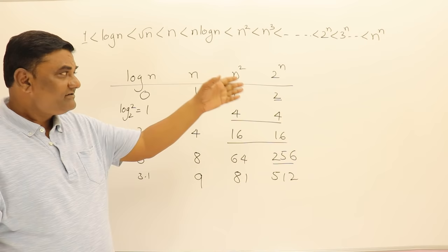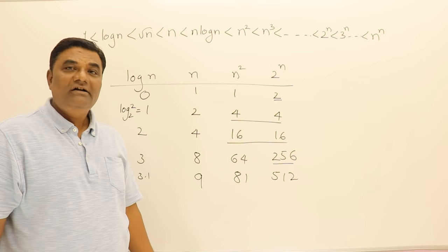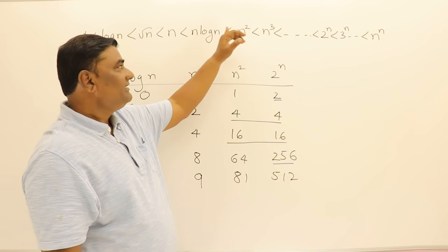So always 2 power n is greater and above that is 3 power n. So from this we can say that for some values of n this is smaller than this one or this is greater than this one. So they are arranged in the order.